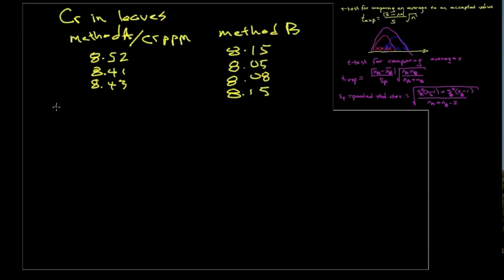We can calculate the averages for these two sets and we find that for method A we get an average of 8.453. For method B we get an average of 8.107.